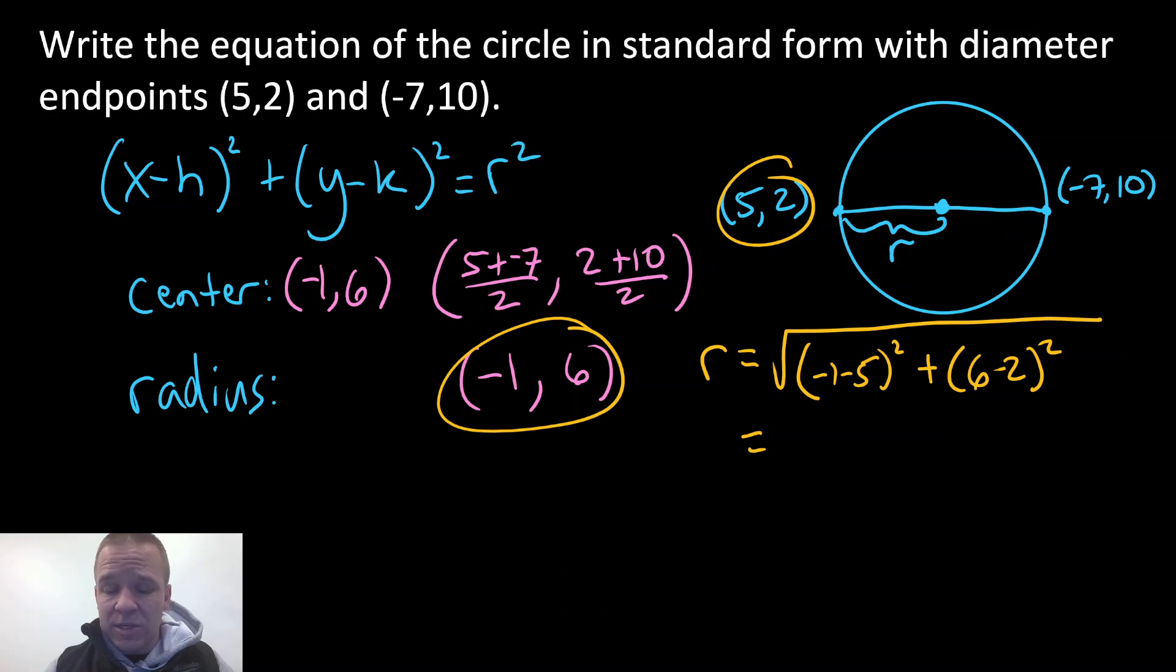All right, so here I'm gonna have -6 squared, that's gonna be 36. And then I have 4 squared is 16, so that's gonna equal, let's see here, 40, 52. Okay, so there's my radius.